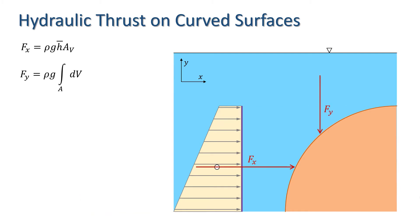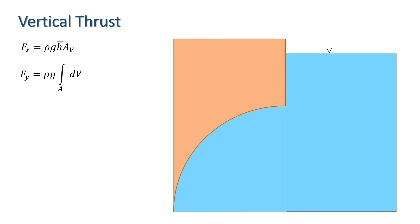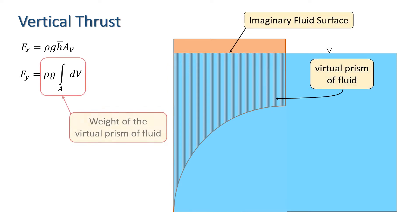In the case of the vertical thrust, we saw that its magnitude is equal to the weight of the fluid in the prism of fluid between the surface we are interested in and the free surface of the fluid. The line of application of the thrust goes through the centre of gravity of this prism of fluid. The direction of the vertical thrust depends on the nature of this prism. If it's a real prism — the fluid is above the surface we are interested in — then we have a downward thrust. When the fluid is below the surface of interest, this generates a virtual prism of fluid, and the vertical thrust equals the weight of the fluid that would fill that virtual prism. To generate the virtual prism of fluid, we have to visualise an imaginary fluid surface at the same level as the free surface of the fluid. The thrust in this case acts upward through the centre of gravity of the virtual prism of fluid.